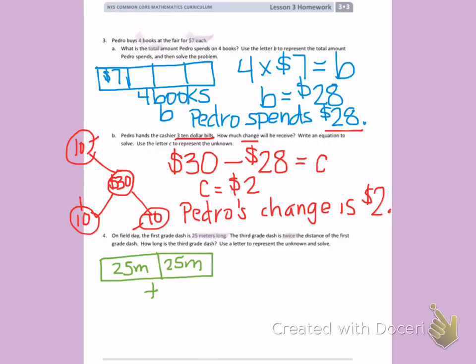When I look at my picture, I see 25 two times, or 25 twice. To solve this problem where I don't know the total, I'm going to add 25 meters plus 25 meters to equal T.